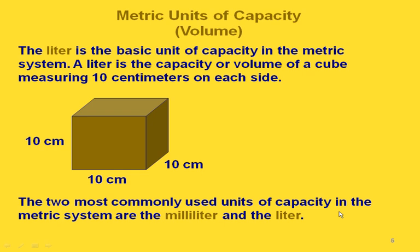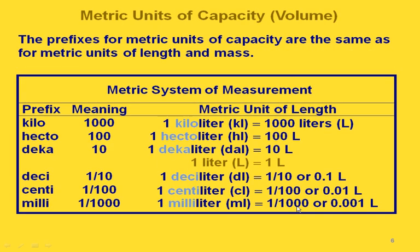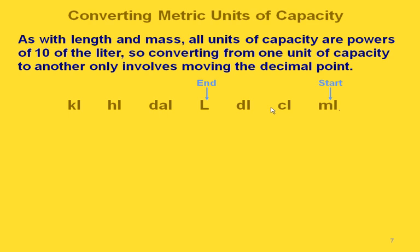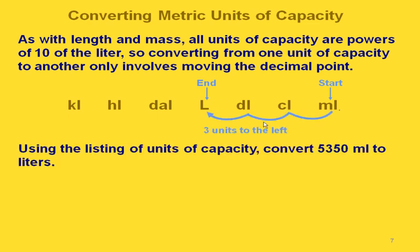When we talk about metric units of capacity or volume, the basic unit in the metric system for volume is the liter. This is the volume of a cube that measures 10 centimeters on each side — how much liquid it takes to fill that cube. The most common units of capacity in the metric system are the milliliter and the liter. Since we're working with the metric system, everything goes by powers of 10, so we only move the decimal point to convert. Our units go from kiloliters down to milliliters. For example, converting from milliliters to liters is three decimal places to the left. So 5,350 milliliters becomes 5.35 liters.